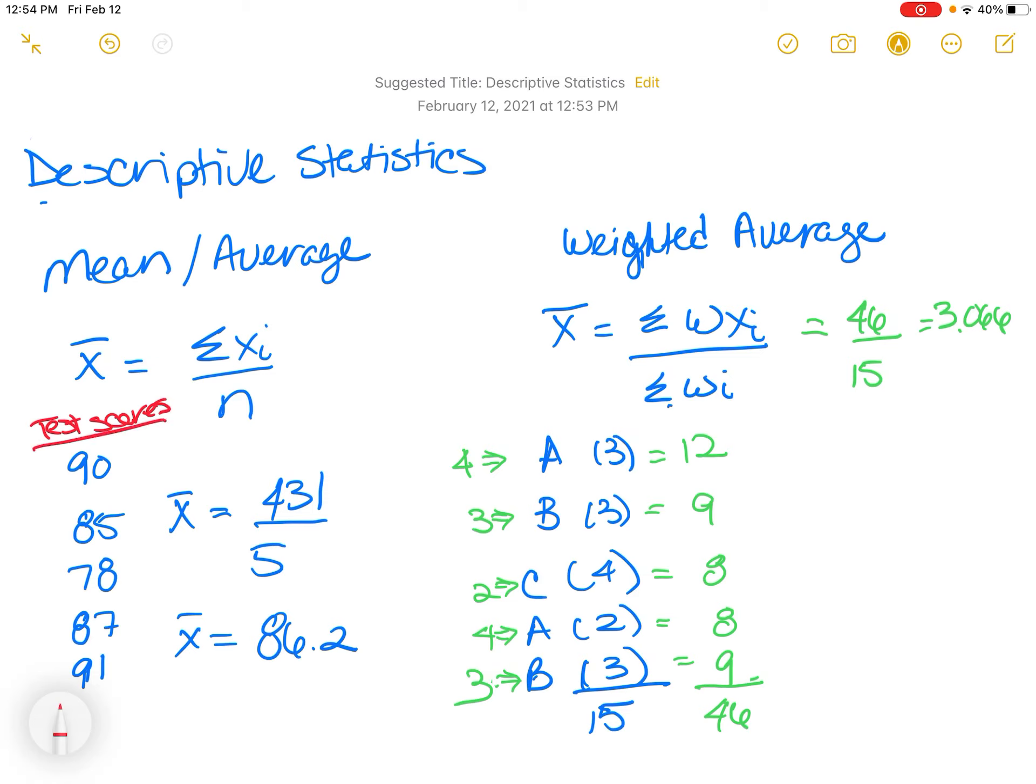And for these five test scores, exam one you got a 90, exam two you got 85, I should say quiz, quiz three you got a 78, quiz four you got 87, and quiz five you got a 91. All right, so you have five quizzes.